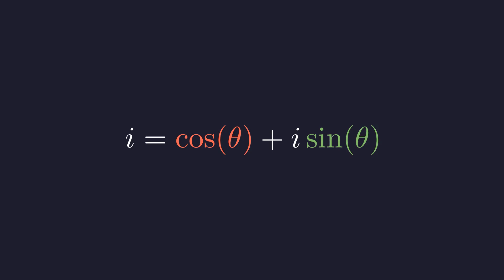we need cosine theta to be 0, and so we substitute pi over 2 for theta. Cosine of pi over 2 is 0, and sine of pi over 2 is 1. This expression now matches the right side of Euler's formula perfectly, which means we can write i as e to the power of i times pi over 2.